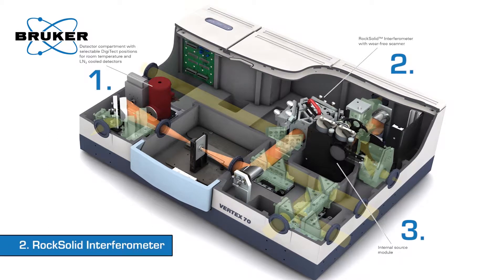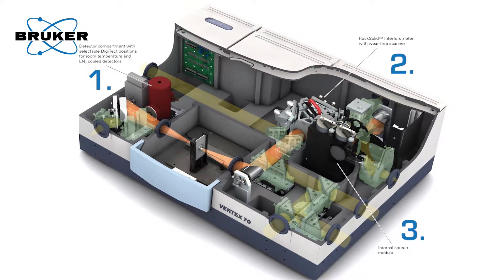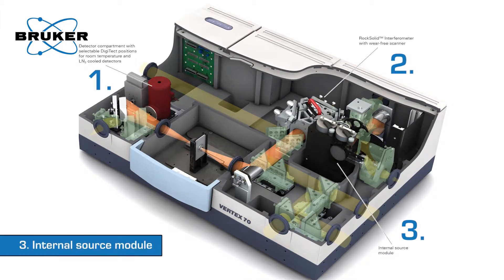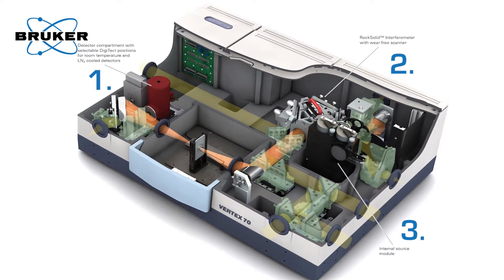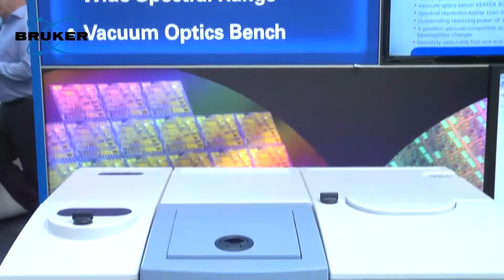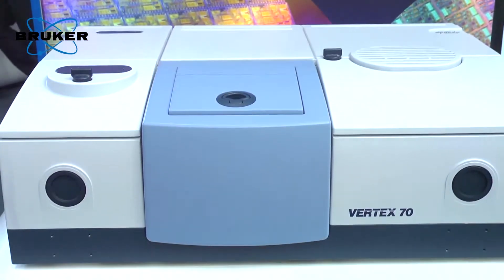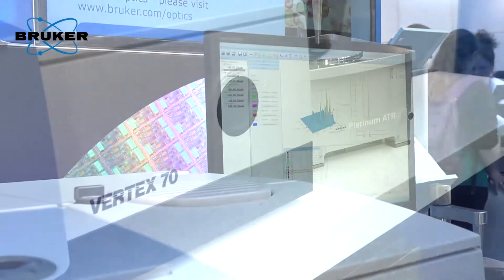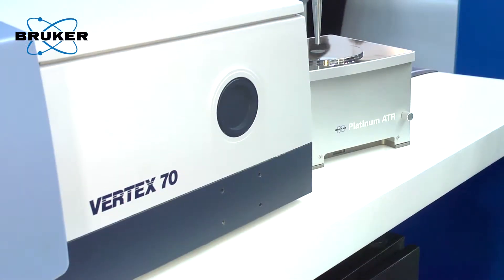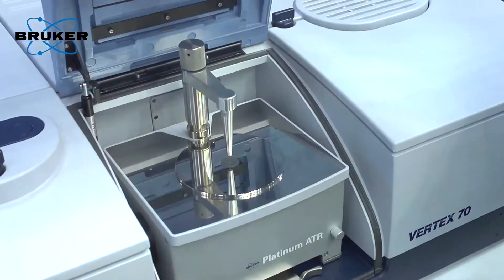The exchange of IR source, beam splitter, and detector is very easy and the software controls everything automatically. But to cover the whole range to FIR, you still have to manually change the beam splitter if you're not using an automatic beam splitter exchanger — and that means we open the optics bench and break the purge or vacuum.